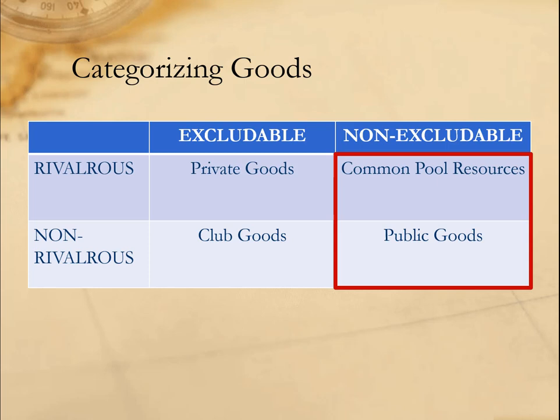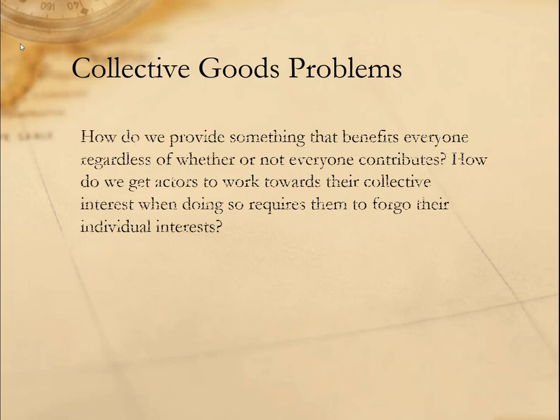But for now, let's focus specifically on the collective goods problem. The collective goods problem centers on the question of how we can get two or more actors — whether states, individuals, or whatever — to work together towards their collective interest when doing so requires one of them to forego individual interests. How, in other words, can we prevent free riding on the effort of others?